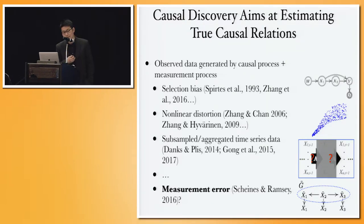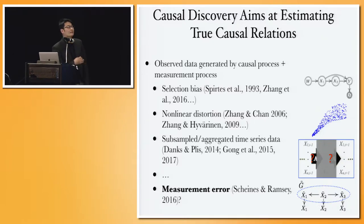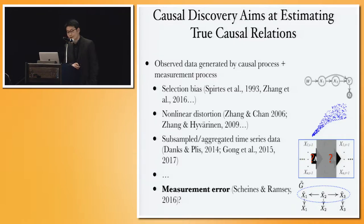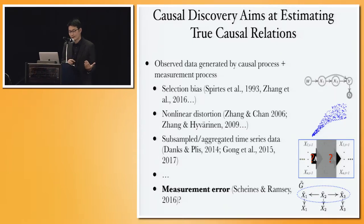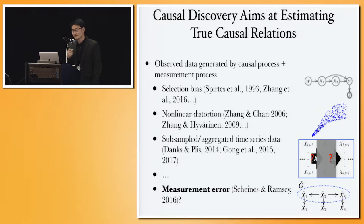We have to deal with observational data, but the data were produced by not only the causal process, but also how you measure it. If you consider both — the underlying causal process and the measurement process as part of data generation — you have to deal with practical issues such as selection bias, non-linear distortion, and subsampling or aggregation in time series data. Essentially, what you want to measure is not necessarily identical to what you actually measure. In practice, we are concerned with the measurement error issue.